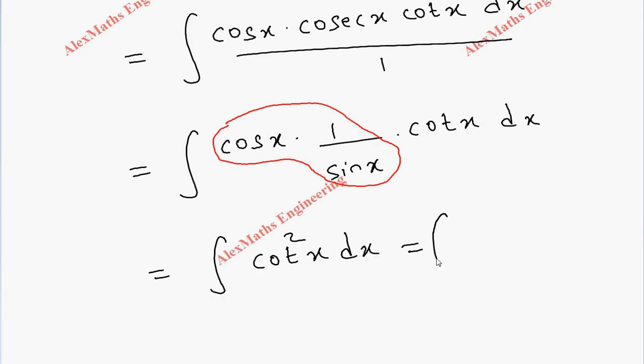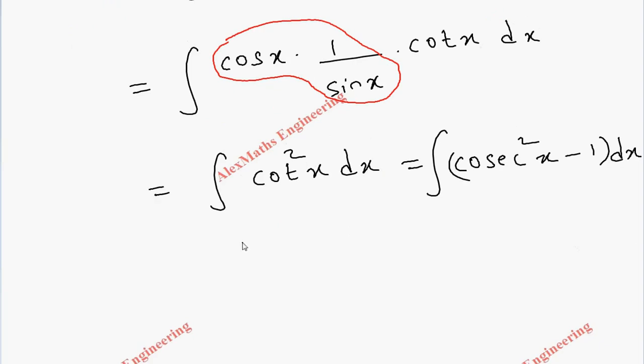We cannot integrate cot²x directly. We have to change this to cosecant²x - 1 using the trigonometric identity. Integration of cosecant²x is -cot x, then -x.